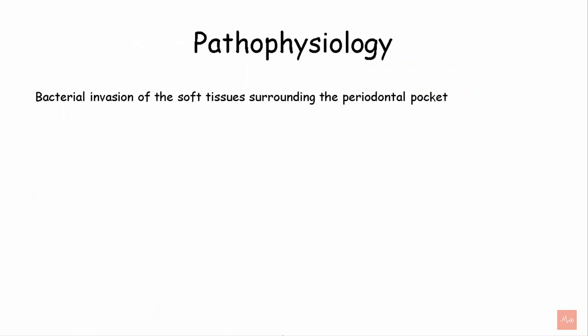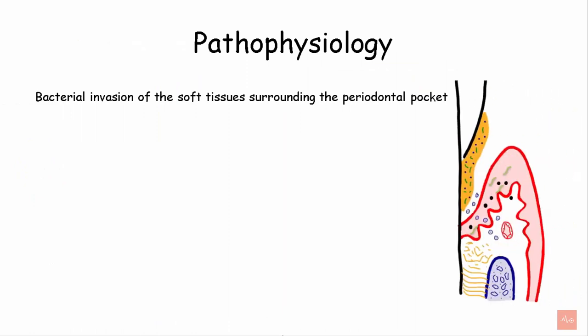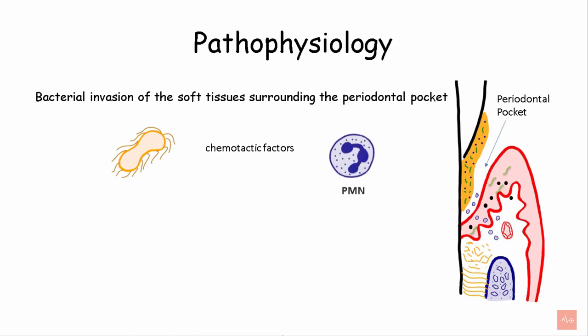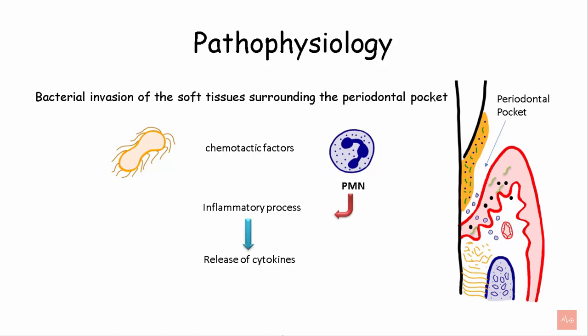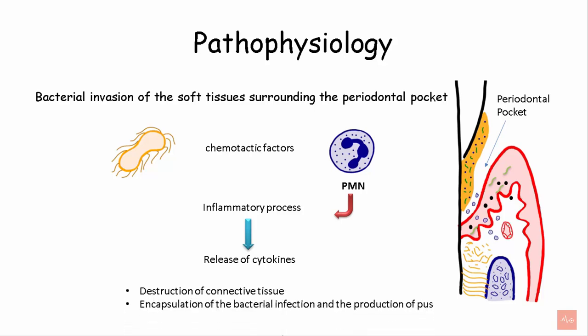Regarding pathophysiology, bacterial infection of the soft tissue around the periodontal pocket can lead to development of a periodontal abscess. Bacteria present in the periodontal pocket release chemotactic factors that attract PMNs to the site of infection, initiating an inflammatory process. The bacteria and PMNs together release multiple cytokines like interleukin-1, interleukin-6, and interleukin-17, causing destruction of connective tissue and eventual encapsulation of the bacterial infection, leading to pus production and periodontal abscess.